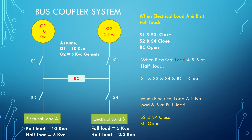In synchronization, it is a parallel operation of two alternators — two generators joined point to point. That is the parallel operation. Looking at the condition: electrical load A and B at full load — load A is 10 kV full load and load B is 5 kV full load.